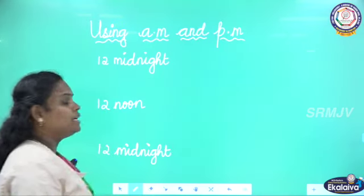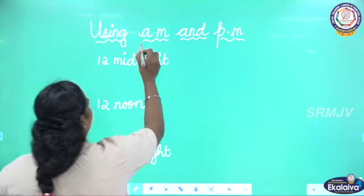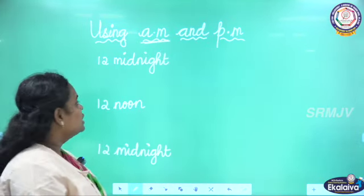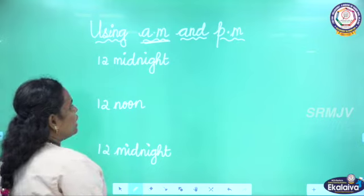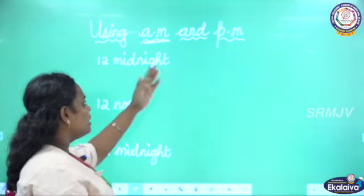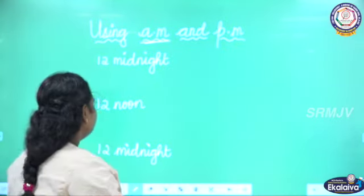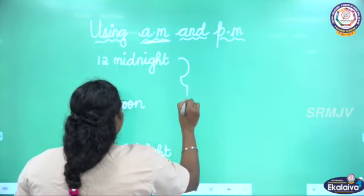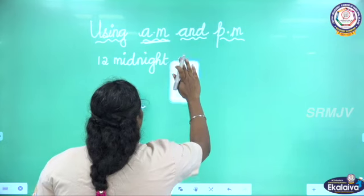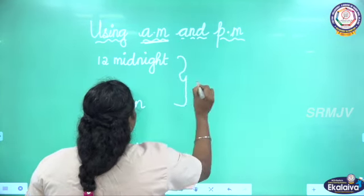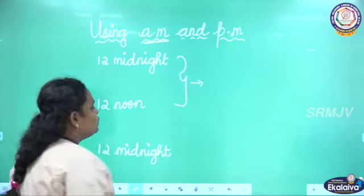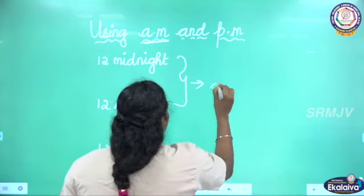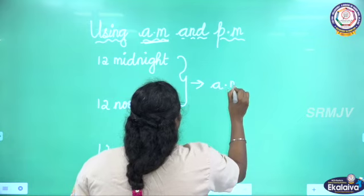So, using AM and PM. What is AM? AM is ante-meridian and PM is post-meridian. So when will you say AM? 12 midnight to 12 noon we say AM.